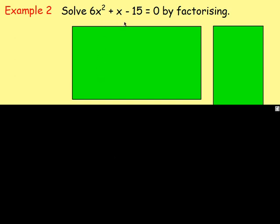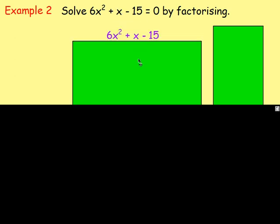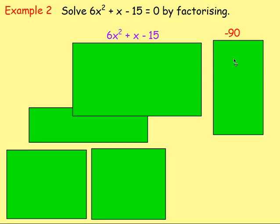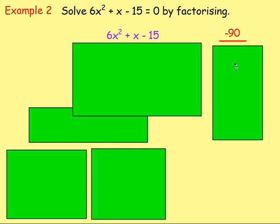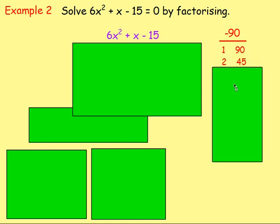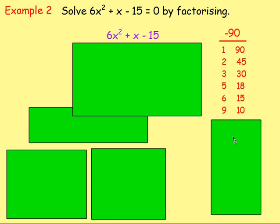So the first thing to do is to factorize. I would take the 6x squared plus x minus 15. And just think what would I get if I factorized that? Now to do that, there's no highest common factor. It's definitely not a difference of two squares. So I'd multiply the 6 and the negative 15 together. If I do that, I get negative 90. What I then do is think about factors of 90. So numbers that multiply to give 90. You'd have 1 times 90, 2 times 45, 3 times 30, 5 times 18, 6 times 15, 9 times 10.